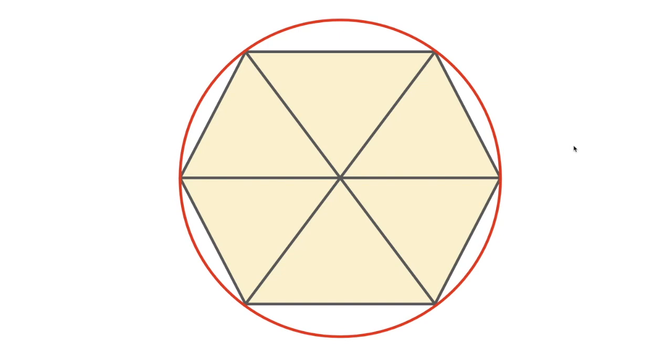If I inscribe this regular hexagon into a circle, if you look at this, each one of these pieces is a radius of the circle. So this is equal to a radius, this is equal to a radius, this is a radius, radius, radius. So every single one of these segments that you see is equal to the length of the radius of the circle that circumscribes this regular hexagon.